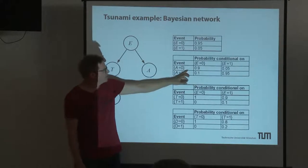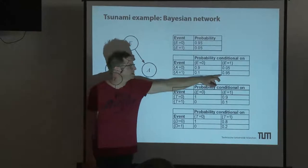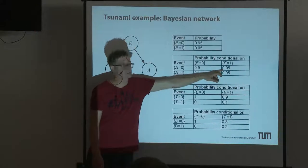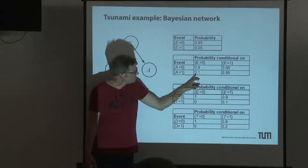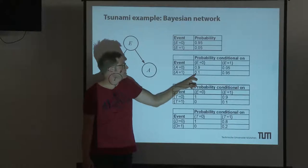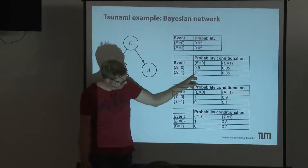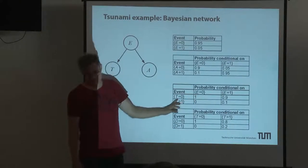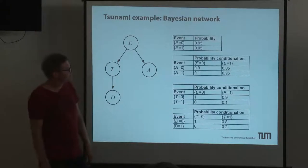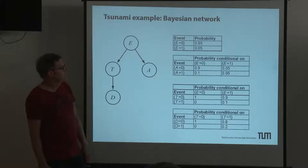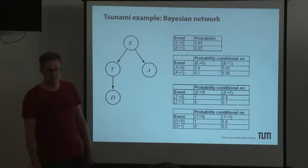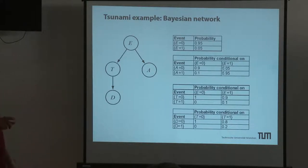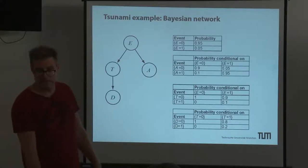For example: alarm equals one given there is an earthquake, 95%. Alarm given there is no earthquake, 10%; and no alarm, 90% — these must sum to one. These are the conditional probability tables for each node. The only thing you have to do to solve the initial problem is to construct the graph and then add those conditional probabilities. I'll quickly finish two more things about why this is very efficient, and show you it's easy to implement in software, and then we have a break.